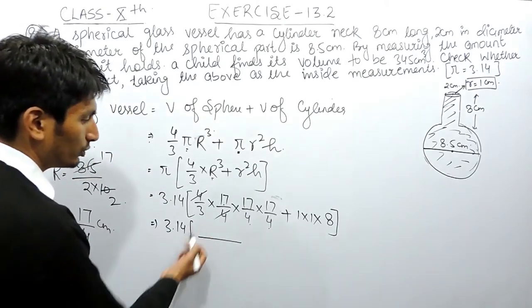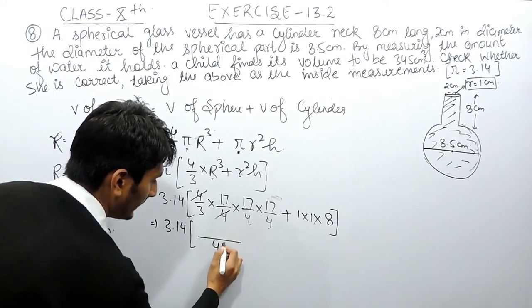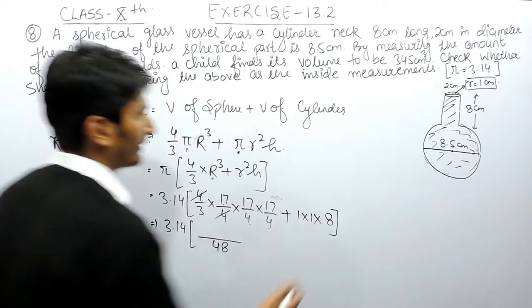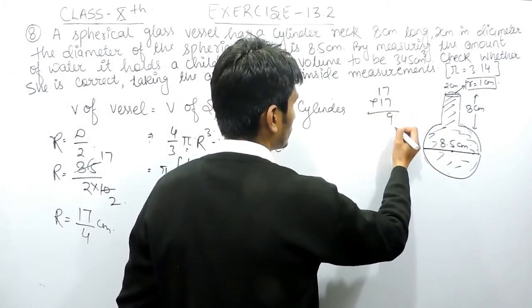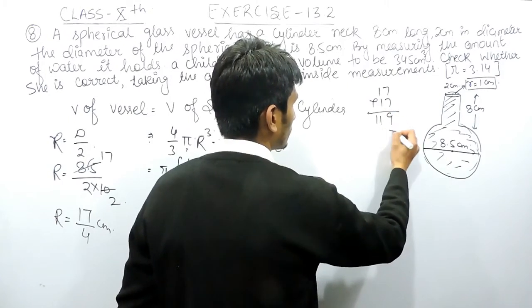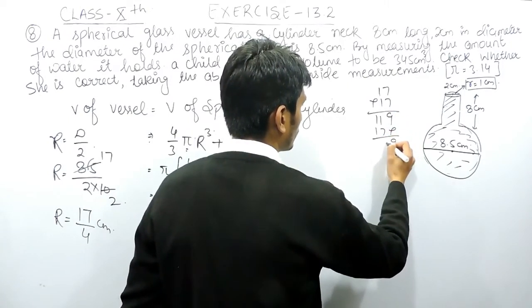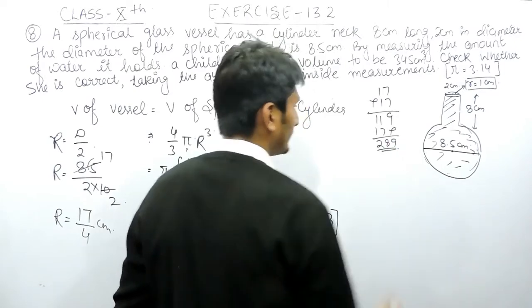If I have to multiply 17 with 17, that will be 289. Now I have to multiply this with another 17.